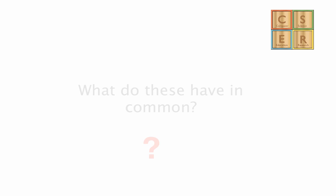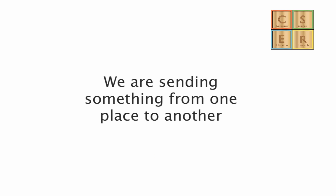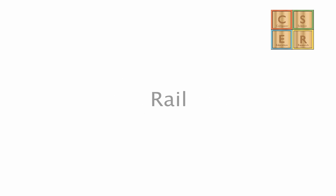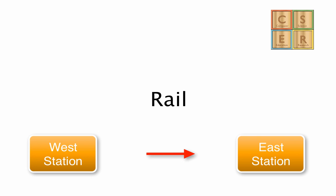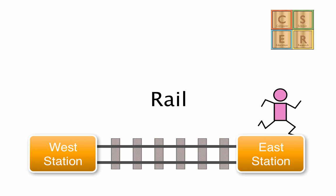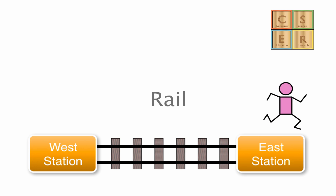What we are doing is sending something from one place to another. Let's look at rail. We've got stations, and we've got people who want to go from one station to another. In reality, these stations are all linked together with railway tracks. So what you've got are the elements of a network joined together by links — in this case, stations and track.